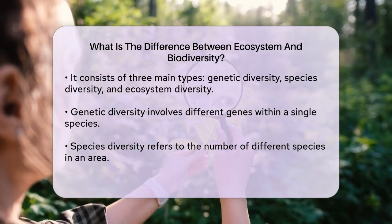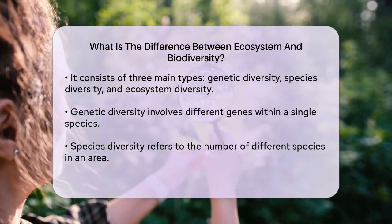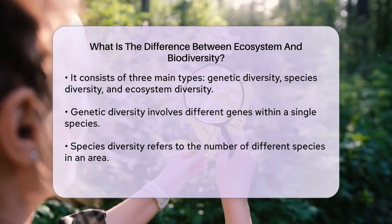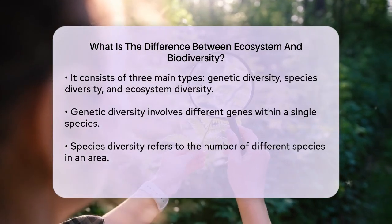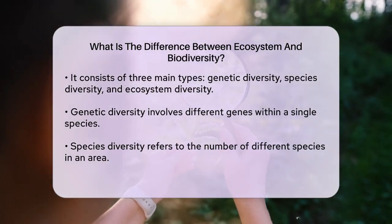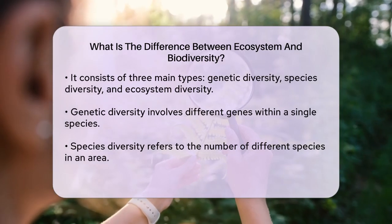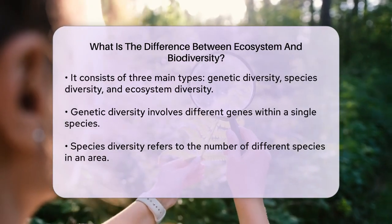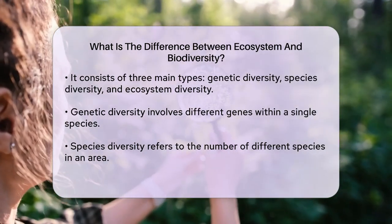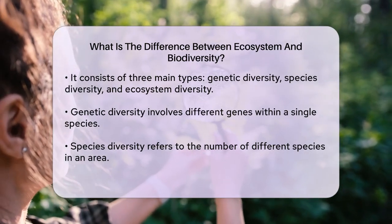To put it simply, biodiversity is like the different neighborhoods in a big city. Each neighborhood, or ecosystem, has its own unique set of residents, or species, and characteristics. Just like how different neighborhoods have different types of houses, shops, and parks, different ecosystems have different types of plants, animals, and environmental conditions.